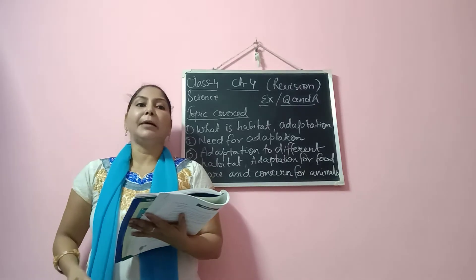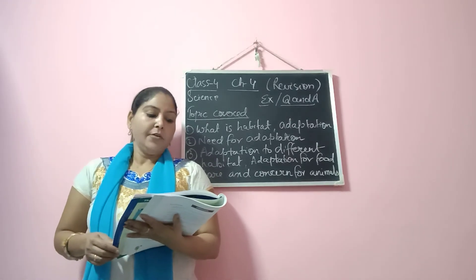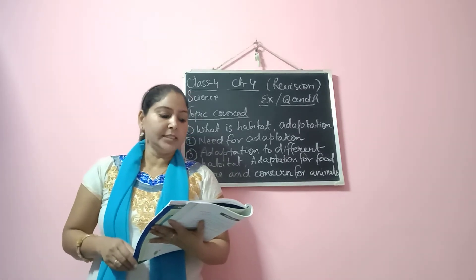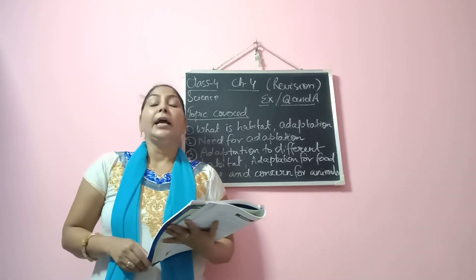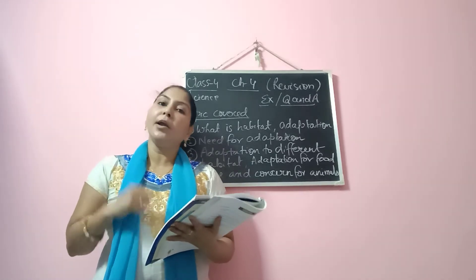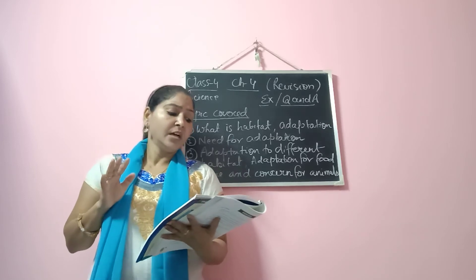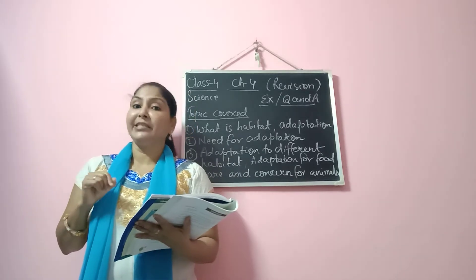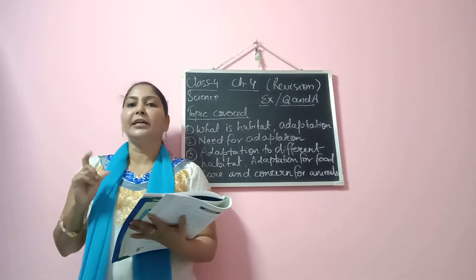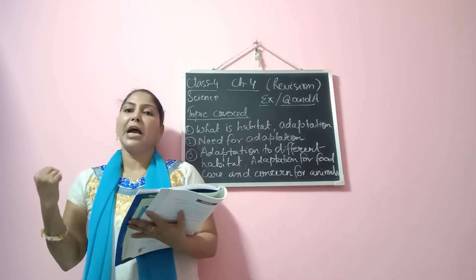Now we move to question number C — answer the following in one word. Question 1: The long sleep of animals during the cold season is called winter sleep or hibernation — you can write either. Question 2: Summer sleep is also known as aestivation. If you write summer sleep, okay, but the correct scientific term is aestivation, and for winter sleep it is hibernation.